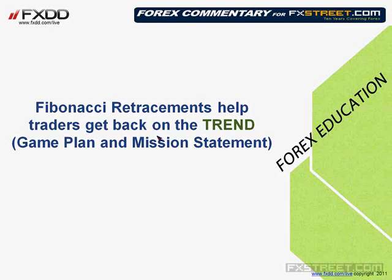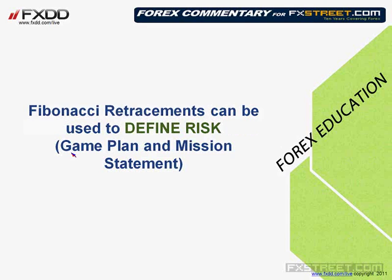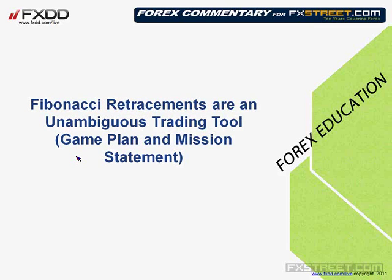Fibonacci retracements help traders get back on trends. Remember, our game plan is to trade the trends because trends are where you make the most amount of money with the least amount of risk. Fibonacci retracements can also be used quite effectively to define risk. If you know where a Fibonacci retracement level is, you can use that as a level to define your risk. If the market stays above it and continues or resumes a trend to the upside, you're golden. If the market goes below that level, that's a signal to perhaps get out of your position.